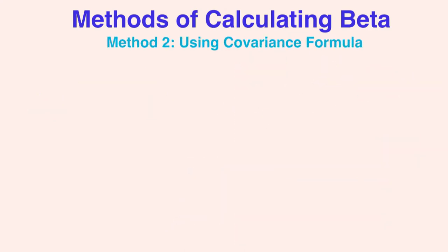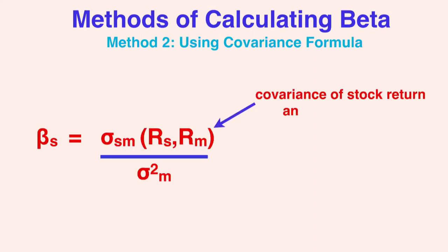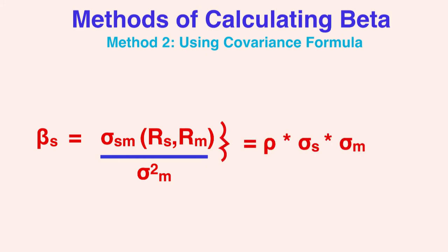Another method of calculating beta is by using this equation. Beta equals the covariance of the stock return and market return over market variance. If you convert covariance into correlation times standard deviation of the stock times the standard deviation of the market, you can cancel out the standard deviation of the market from the numerator and denominator, resulting in beta equals correlation times standard deviation of the stock over standard deviation of the market.